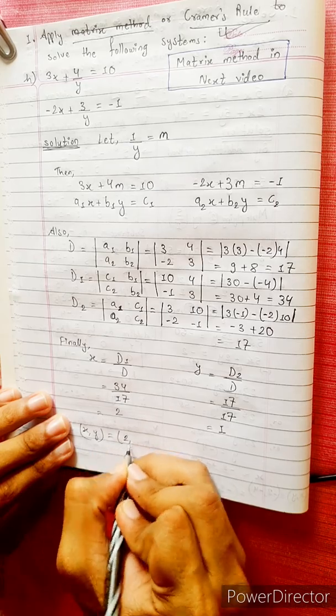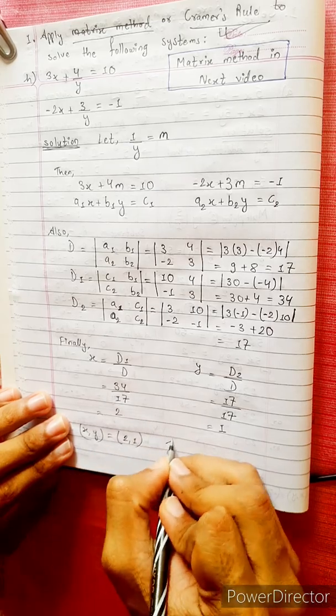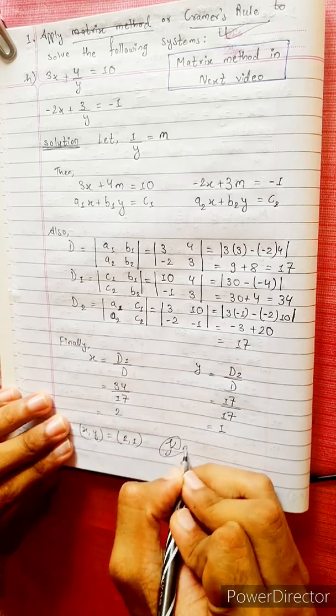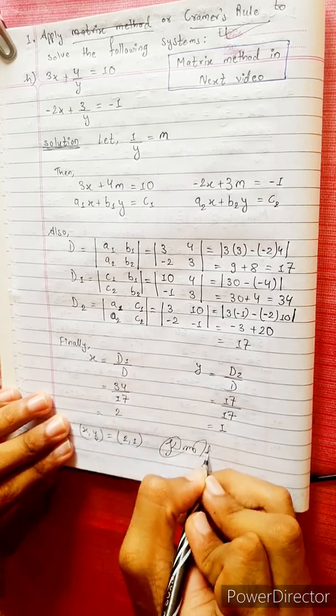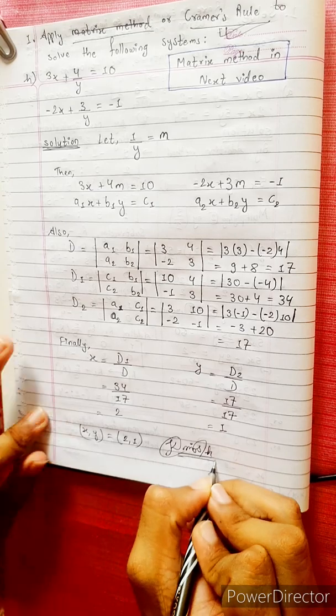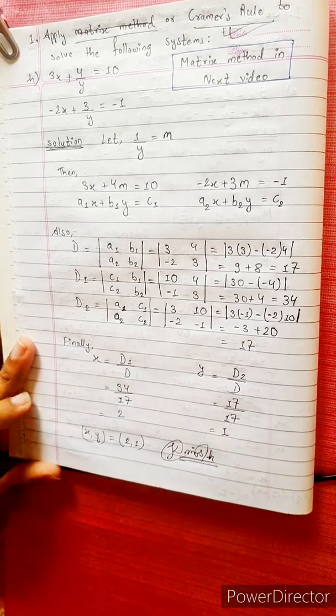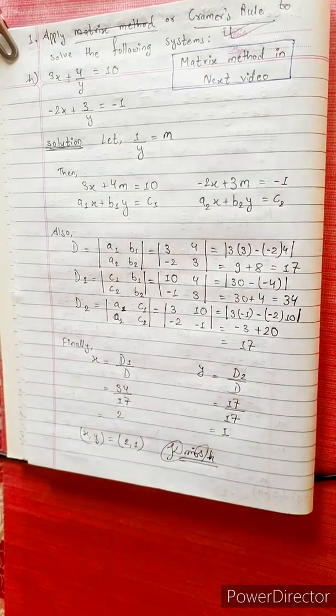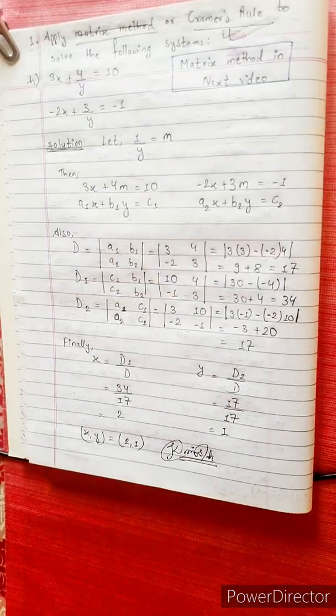So the final answer is: x equals 2 and y equals minus 1. Thank you.